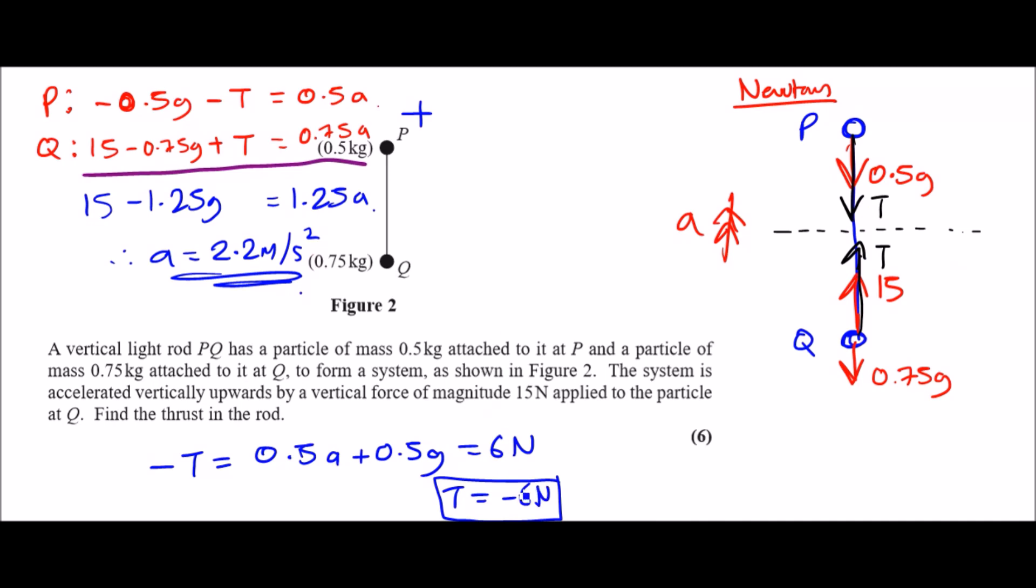Either way, it doesn't change the case. So the final result would therefore be the thrust would therefore be plus 6 Newtons, because it has to be a positive value. And that's it guys, I hope this helped. Let me know if you've got any further suggestions to this question, but otherwise let's move on to the next one.